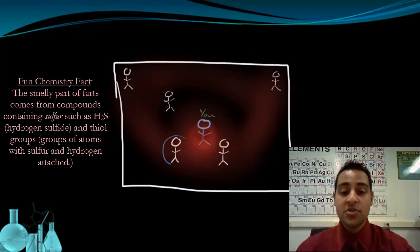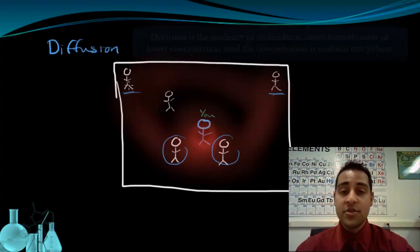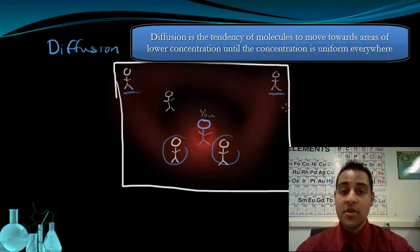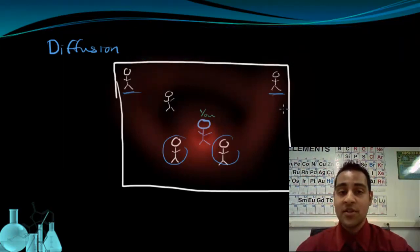Now the reason the people closest to you smelled it before the people further away is because the gas molecules are constantly moving and constantly spreading. We call this Diffusion. Diffusion is a tendency of molecules to move from an area of high concentration to an area of lower concentration until the concentration is uniform throughout. That means until the concentration is the same everywhere, the gas molecules will tend to keep moving towards that lower concentration area.